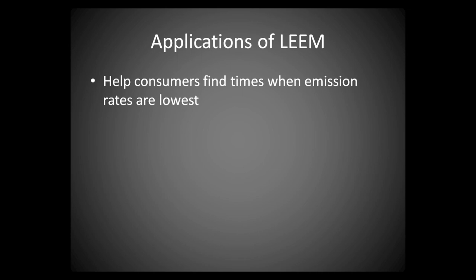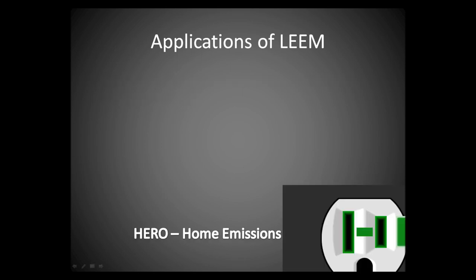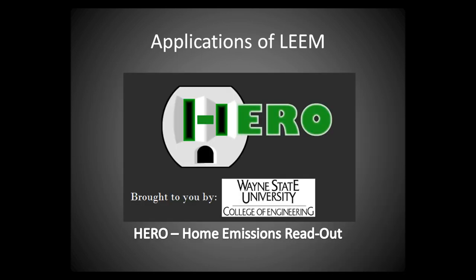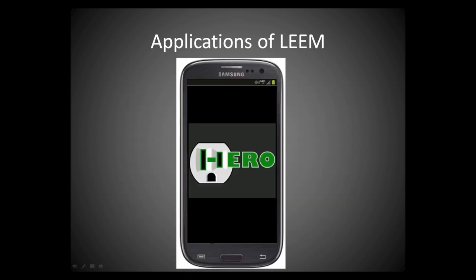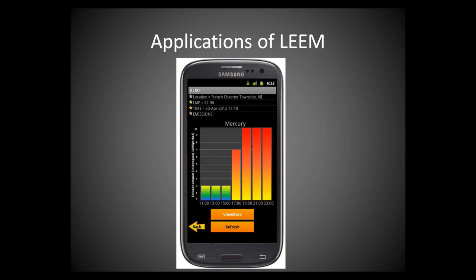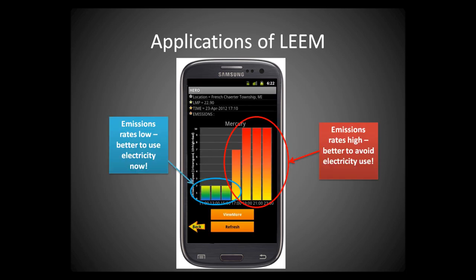LEAM can be used to help consumers find the times when using electricity will have the lowest impact on air emissions. We have developed an app called HERO, which stands for Home Emissions Readout. HERO uses LMP Emissions Estimation Method to show users real-time emissions. People can use this information to schedule their electricity use — for instance, they can use HERO to determine the best time to run the dishwasher or even plug in an electric car.